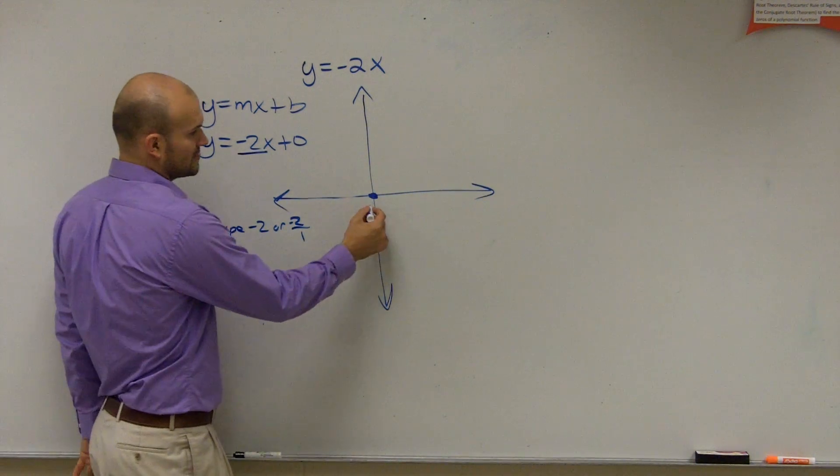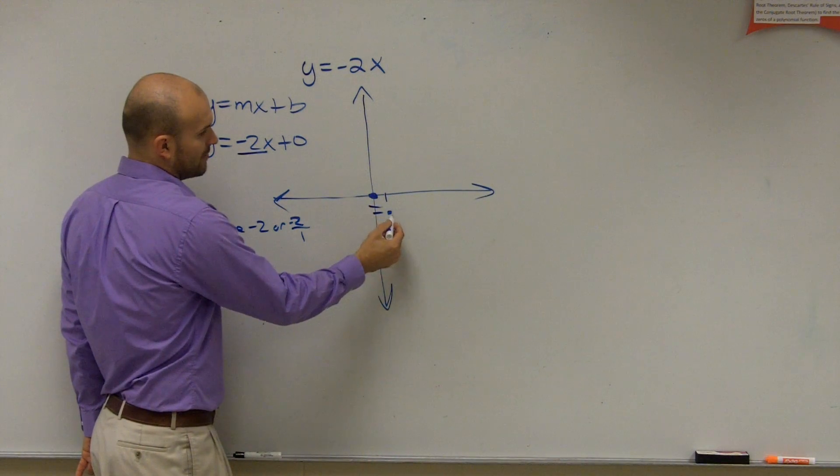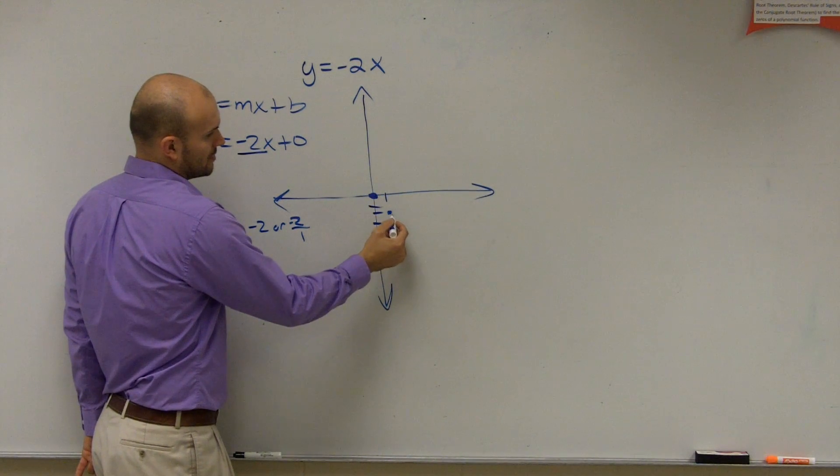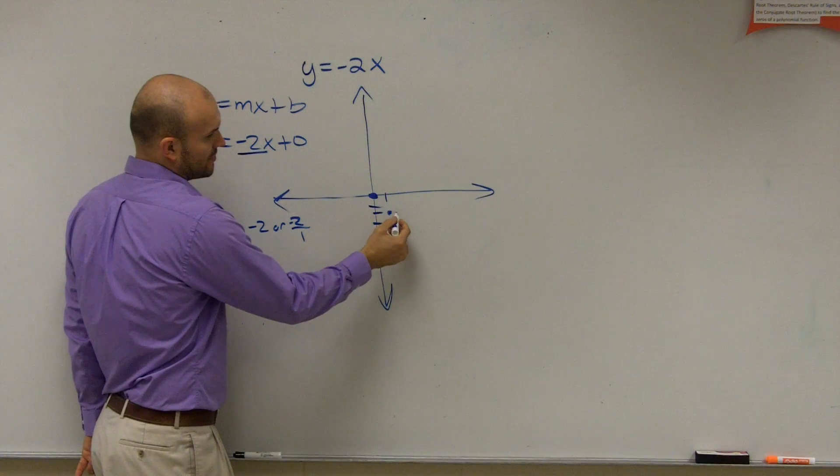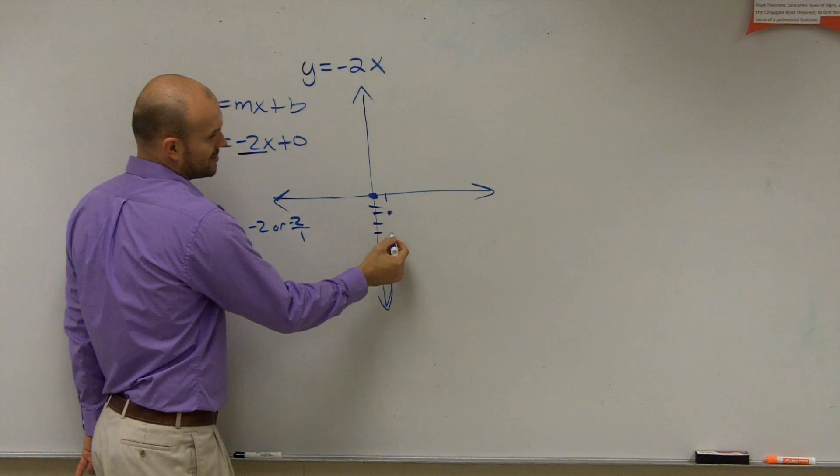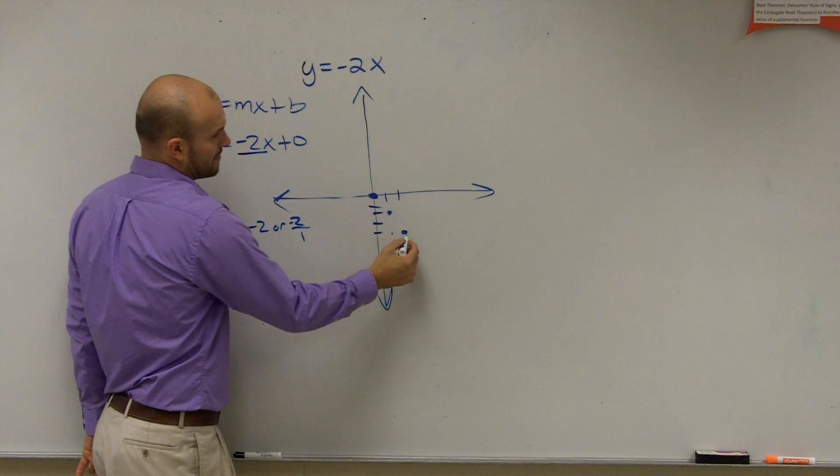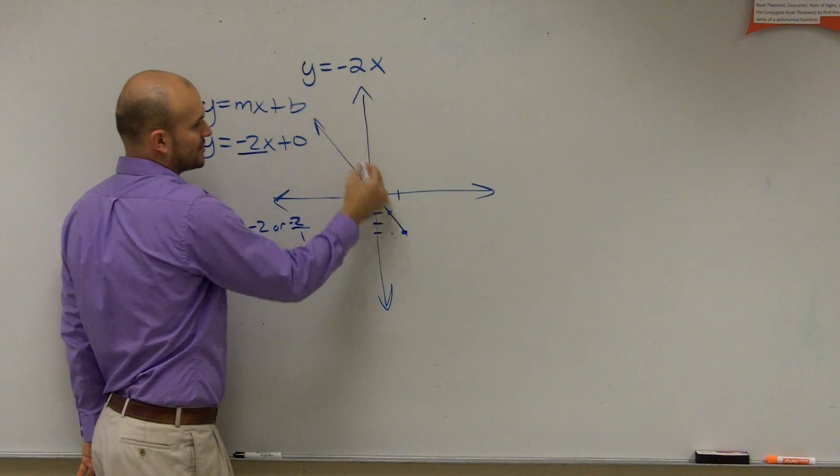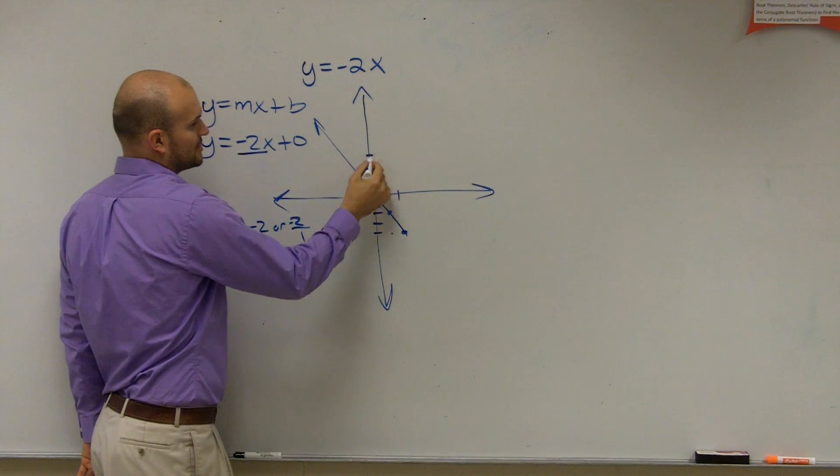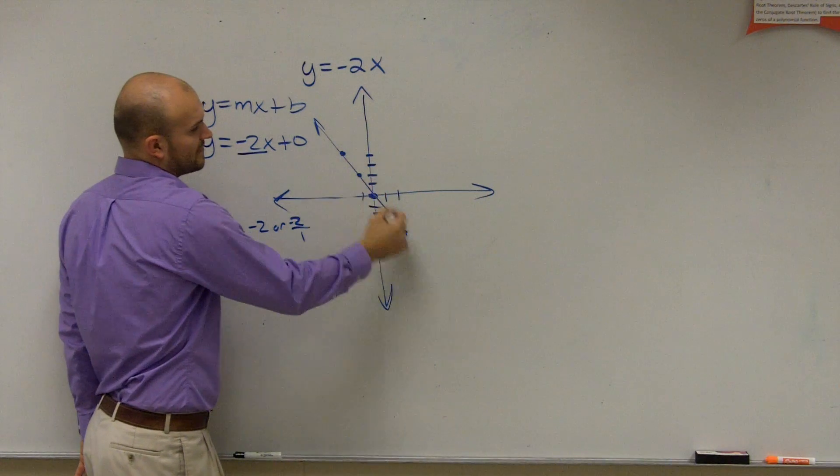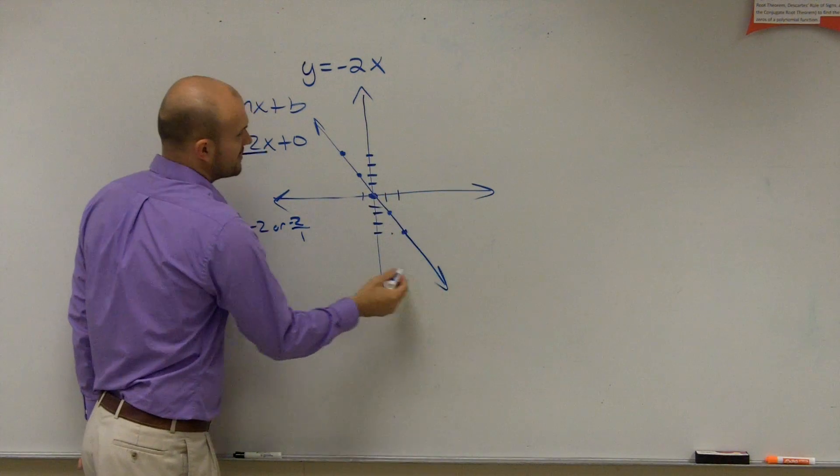So what that tells me is I can go down 2 to the right 1. Down 2 to the right, down 2 to the right 1, down 2 to the right 1 again. You could also go up 2 to the left 1, up 2 to the left 1, and just follow that pattern. Make sure you put your lines on there.